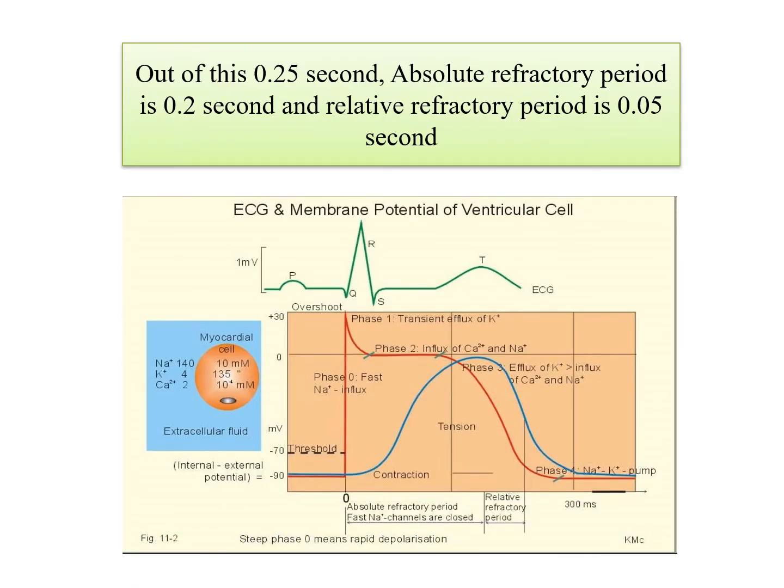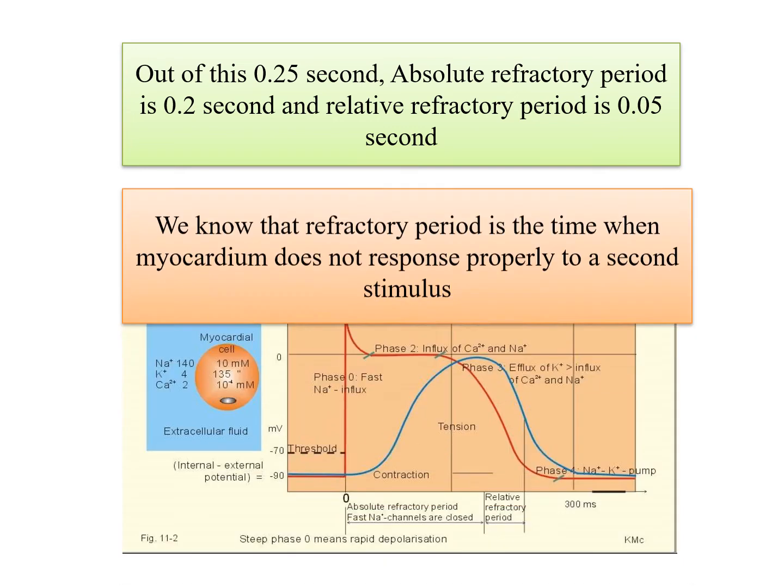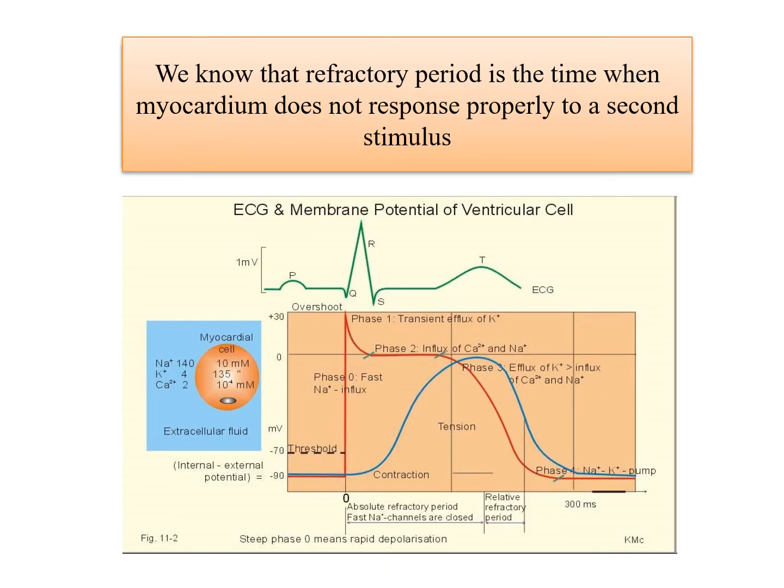Now, out of this 0.3 or 0.25 second of action potential, the absolute refractory period is 0.2 seconds and the relative refractory period is 0.05 seconds. So we can see that almost the whole part of this action potential, the cardiac muscle remains refractory. What is the refractory period? It is the time when the myocardium does not respond properly to a second stimulus.